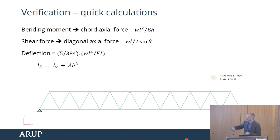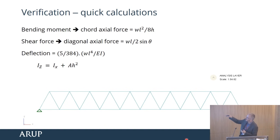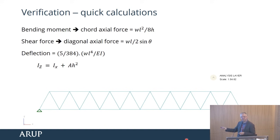Assume the truss is a beam. Bending moment WL squared upon 8, divide by the depth of the truss, gives you the force in the top or bottom boom. Work out the shear force — quite easy for a beam — then look at the angle diagonals and work out the axial forces. For deflection of the truss, you know the deflection formula for a beam; the I of the truss is based on the area of the truss members and their separation. So it's very quick and easy to work out approximately what the key values are going to be on the truss, and if they don't match up, you've made a mistake either in the analysis or in your hand calculations.